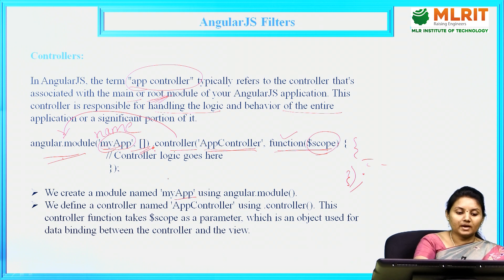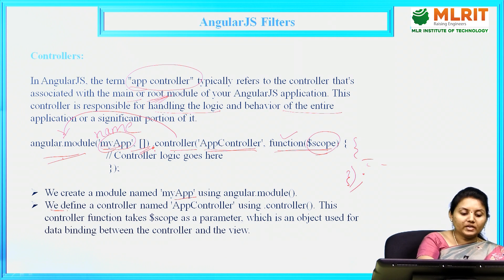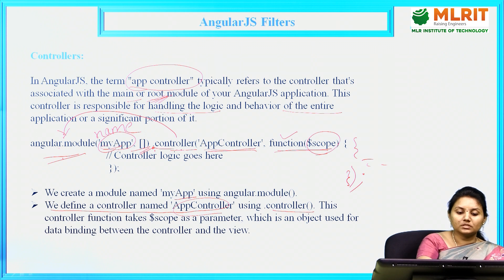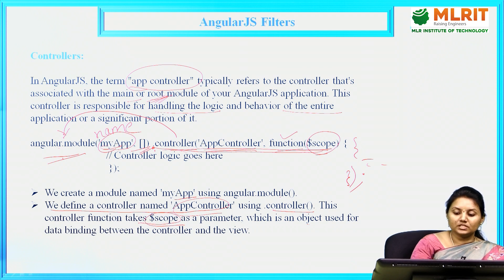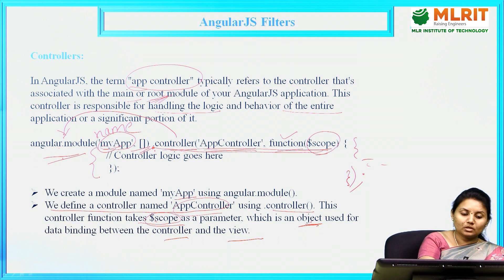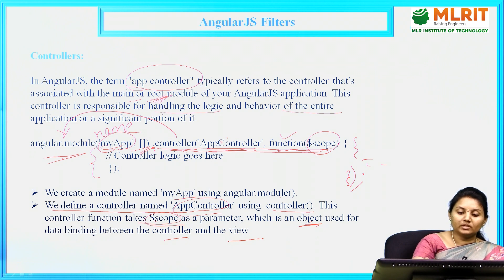We create a module named 'myApp' using angular.module and define a controller named 'appController' using .controller. This controller function takes scope as a parameter, which is an object. Scope is nothing but an object used for data binding between the controller and the view — whatever business logic you write is controlled by the app controller using this scope.